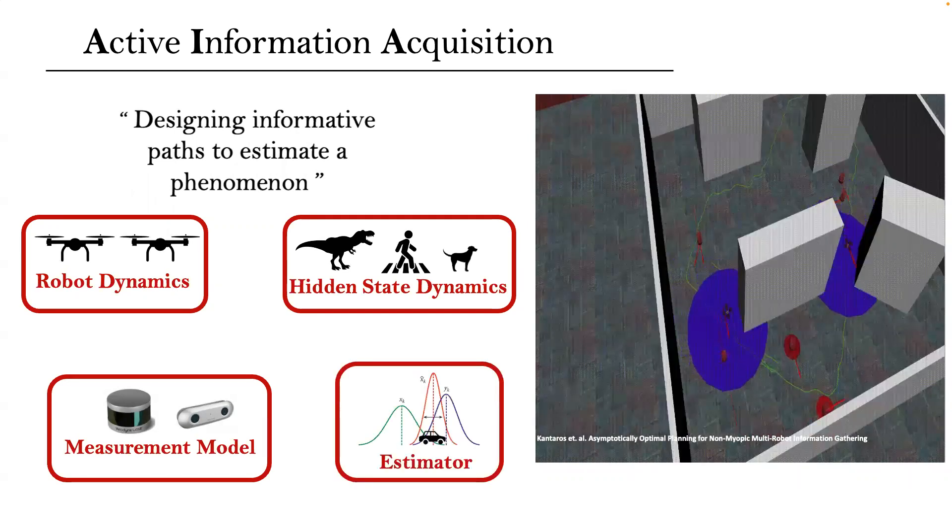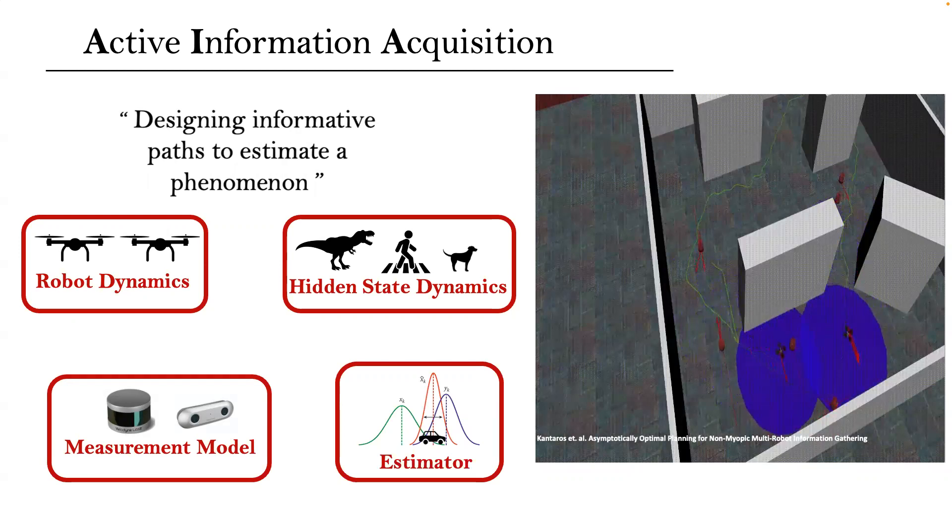Typically, a prior estimate over the possible locations of the targets is assumed that shall be updated using cumulative measurements and an estimator.